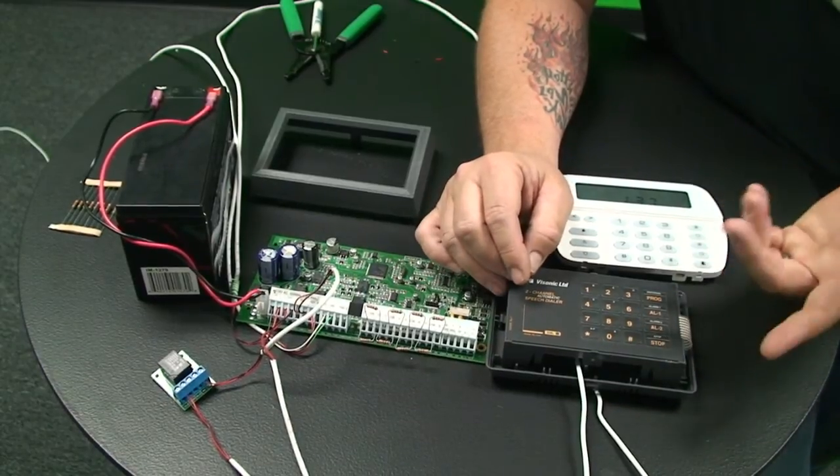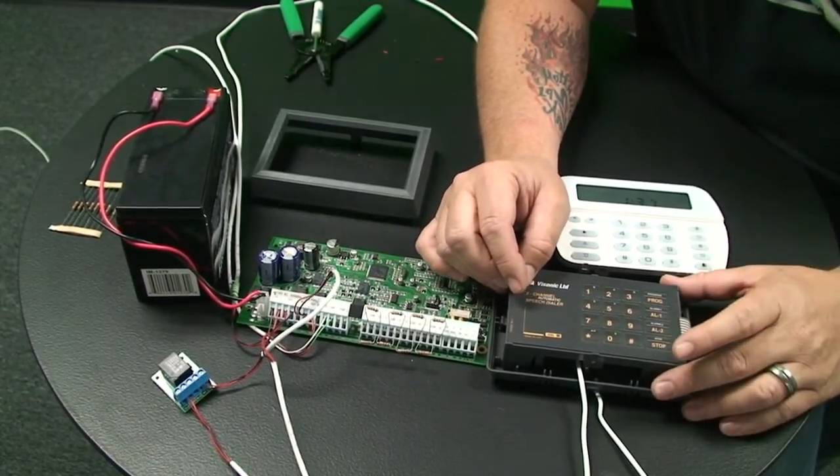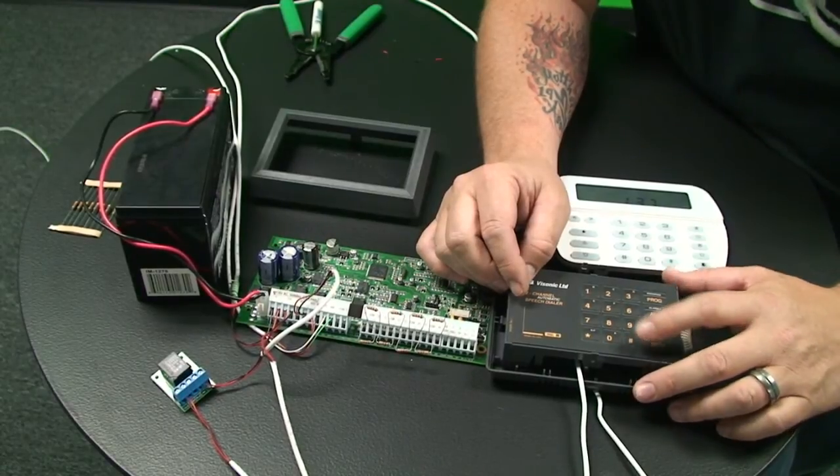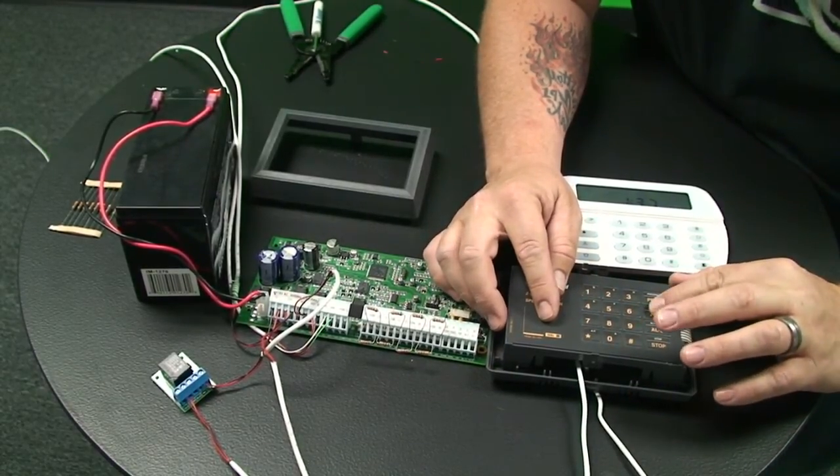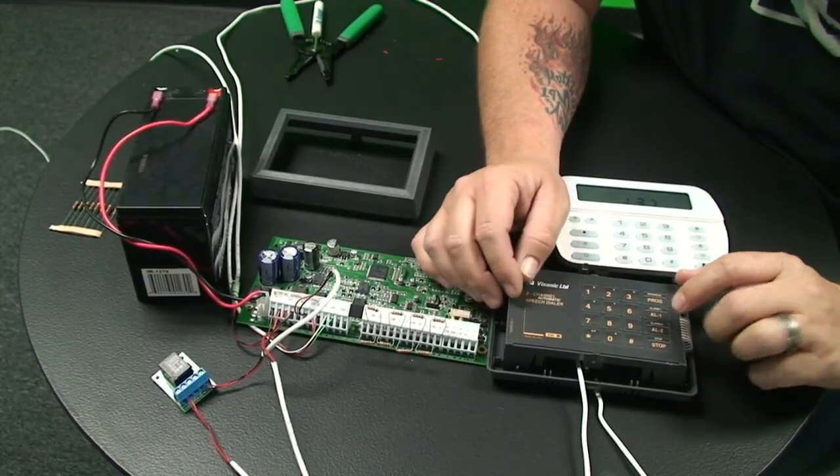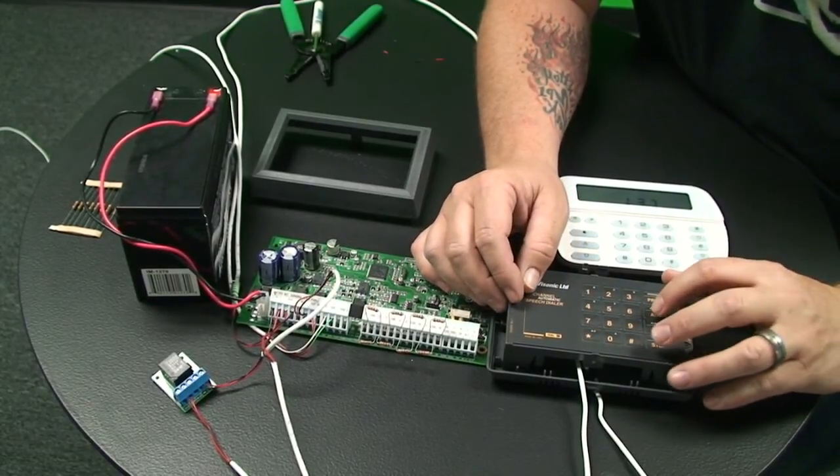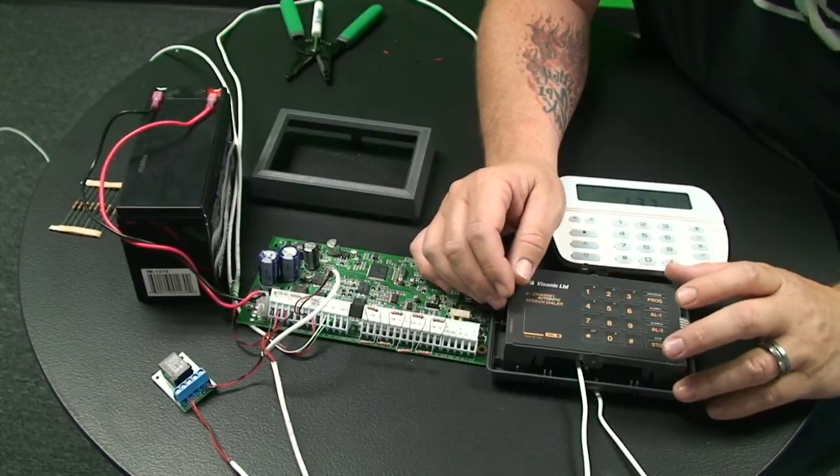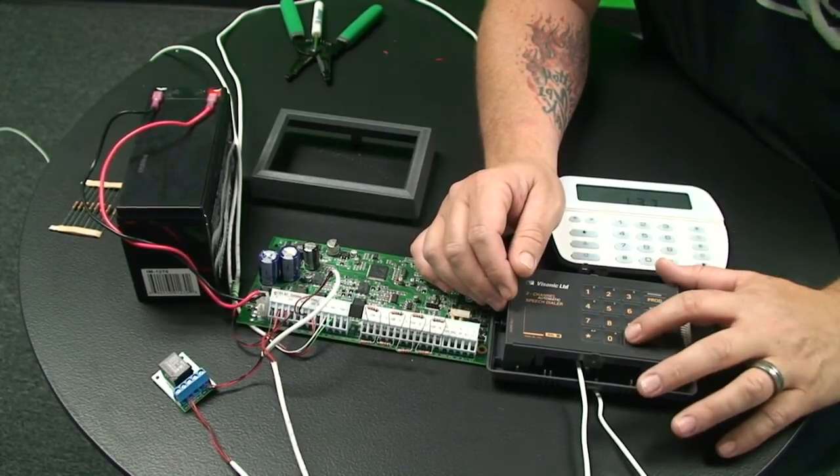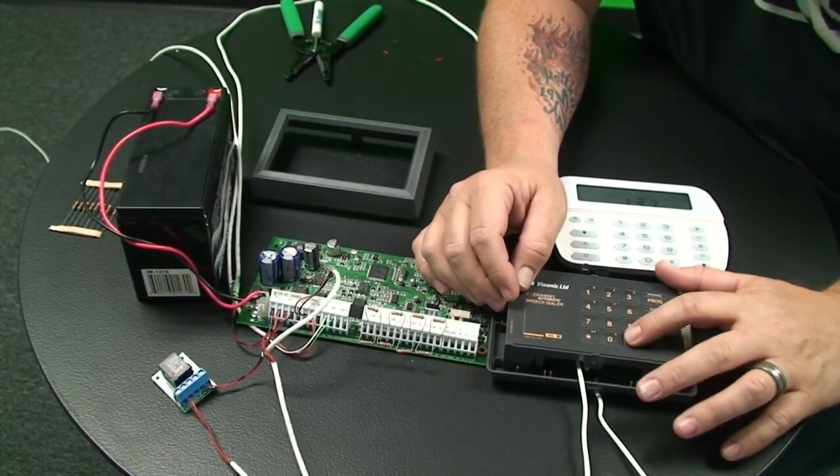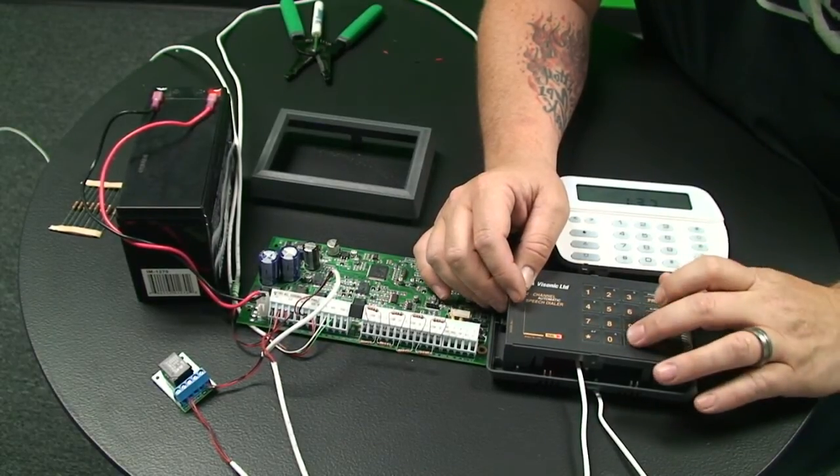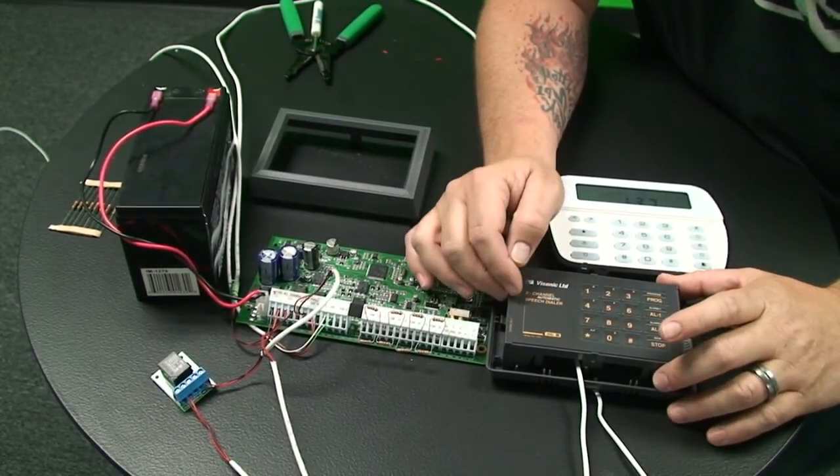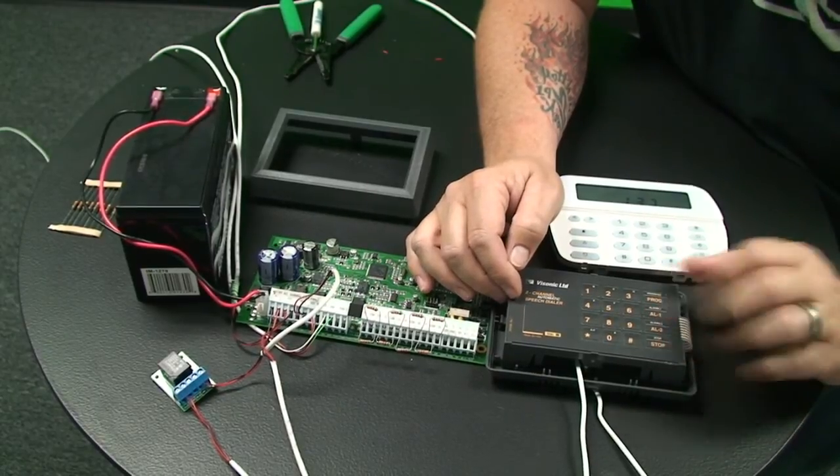So now we can actually program a message, and this is very simple to do. You can press the pound key, and then you'll see the dial light come on. Immediately press and hold down AL1. When you do that, you can actually deliver your message, and you have about 10 seconds to deliver a message. When you're done, you just press the pound key. So we go program, and we say my alarm is going off, and then press the pound key. Dial light extinguishes, and now you have a message for AL1.